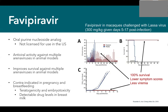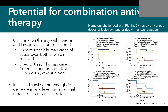Like ribavirin, favipiravir is teratogenic and embryotoxic, and is contraindicated in women who are breastfeeding. You can also potentially combine both favipiravir and ribavirin therapy. This has been done in a few human cases — three total published: two for Lassa fever and one for Junin virus infection. All three survived, but with an N of three it's hard to know how effective this combination is.